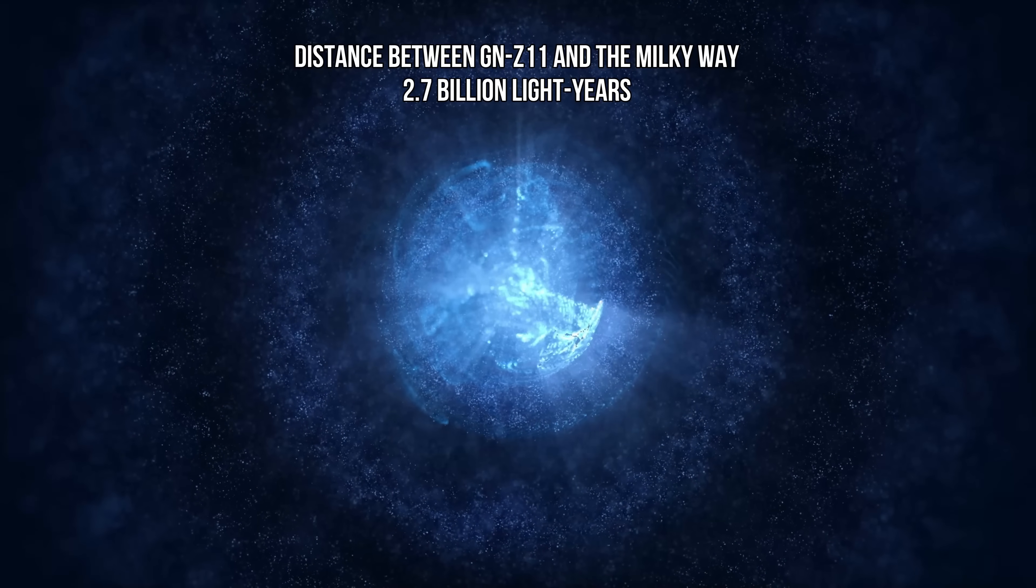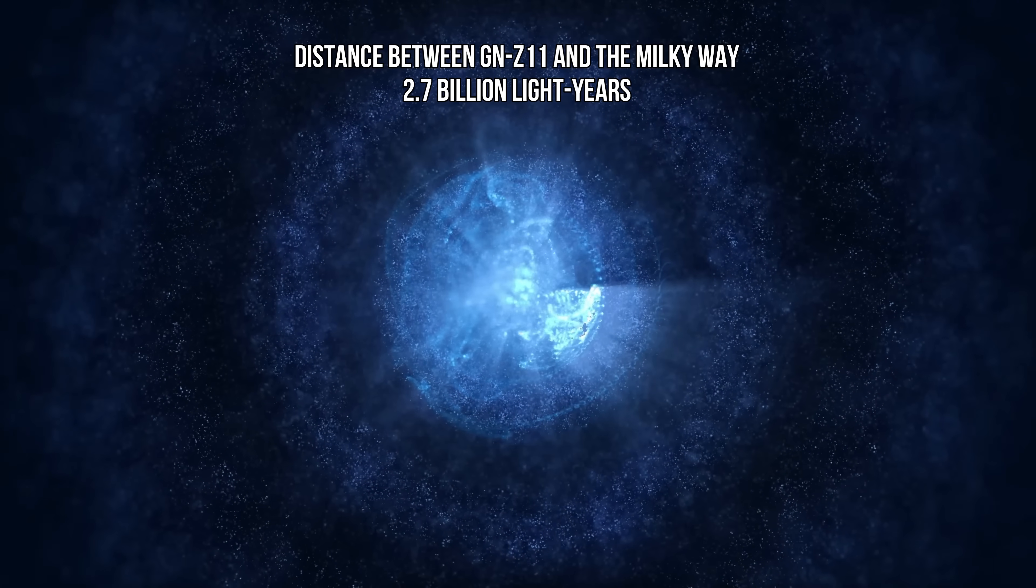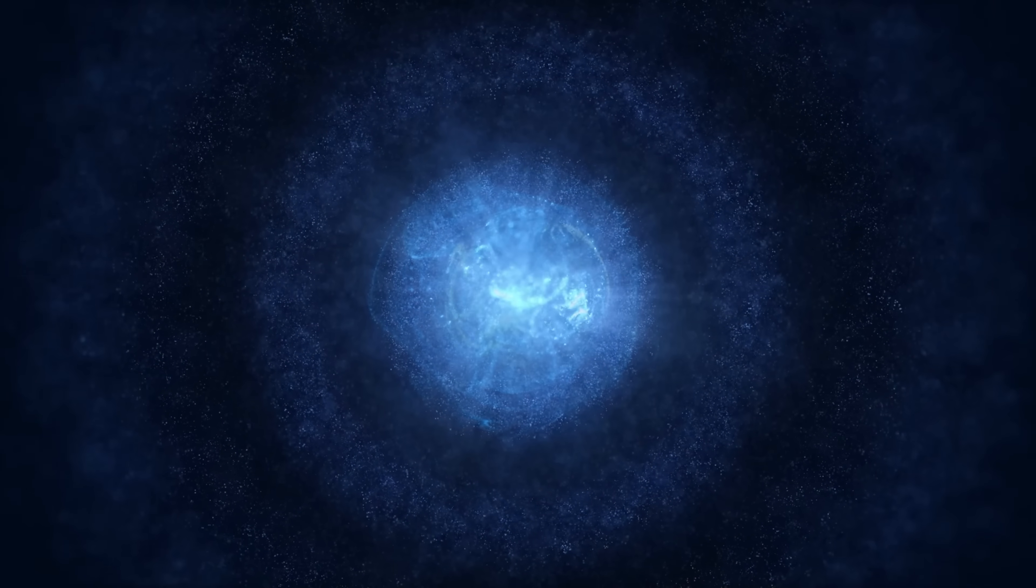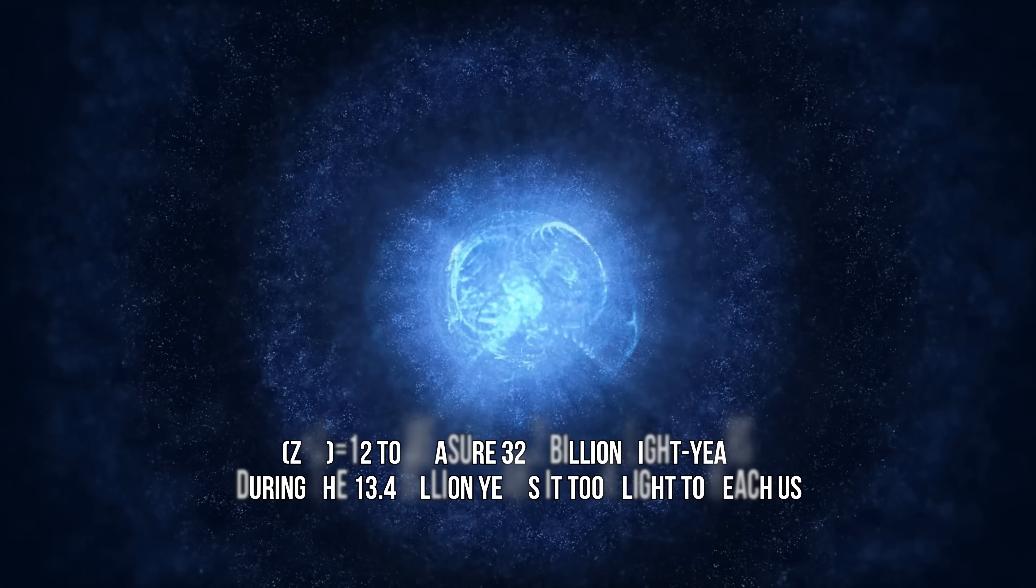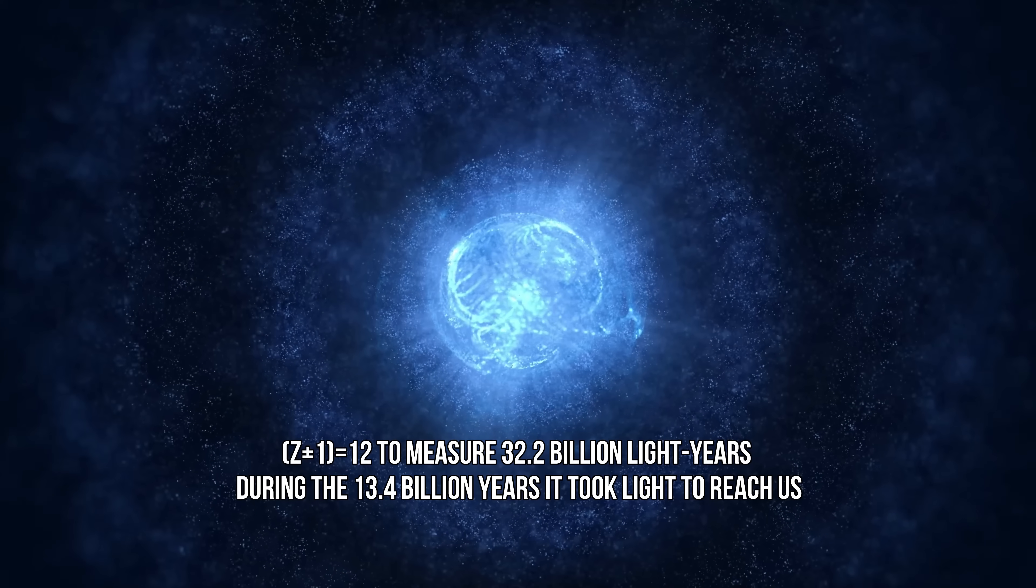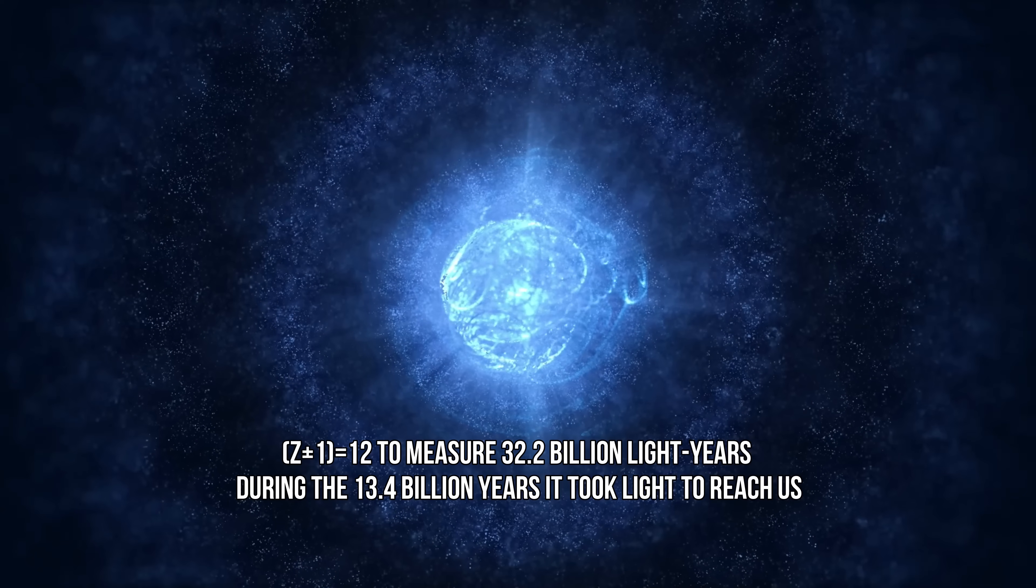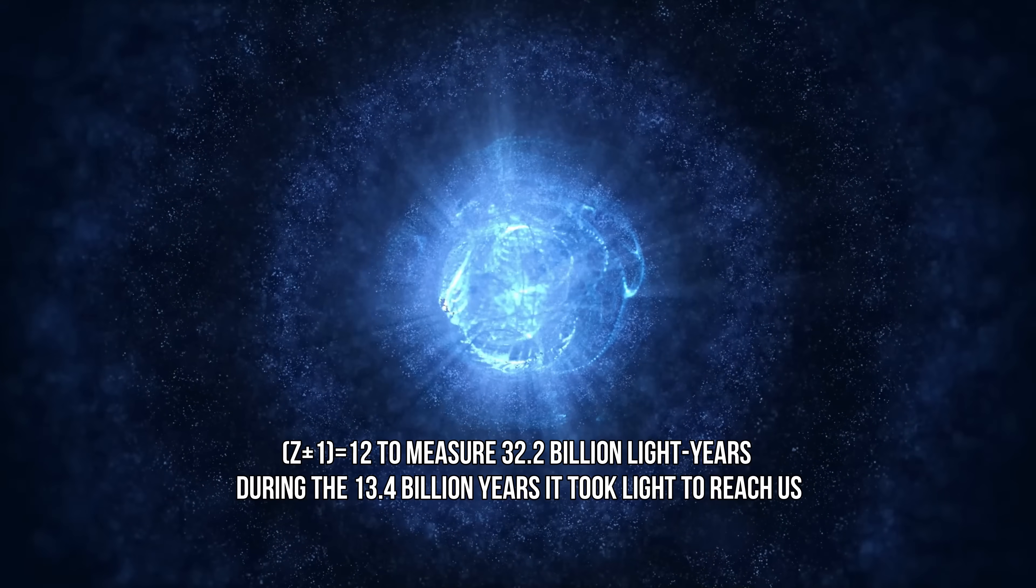the distance of 2.7 billion light years that existed between GNZ 11 and the Milky Way at the time light was emitted increased by a factor of Z plus 1 equals 12, to measure 32.2 billion light years during the 13.4 billion years it took light to reach us.